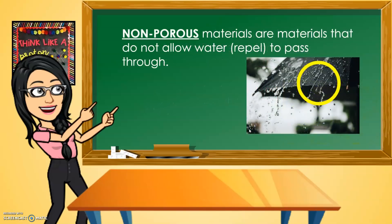Non-porous materials are materials that do not allow water to pass through — they do not absorb water. For example, a raincoat: when it rains, the water just slides off and is not absorbed because the raincoat is non-porous. It will not allow water to pass through.